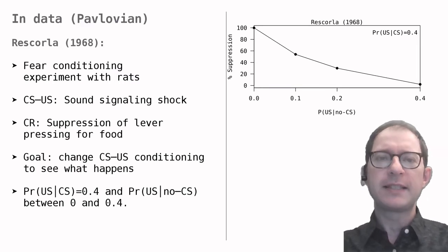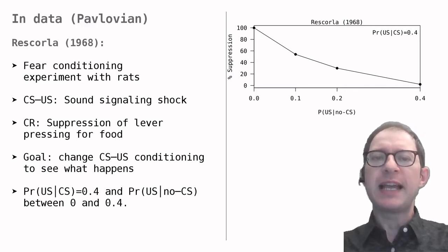These are the results. The measure percent suppression indicates how much the rats stopped pressing the lever while the sound was playing. 100% means that they stopped completely. 0% that they continued pressing as much as before. This measure is explained in detail in the lesson on blocking and over expectations, but what we really need to know is that a higher value means more learning.